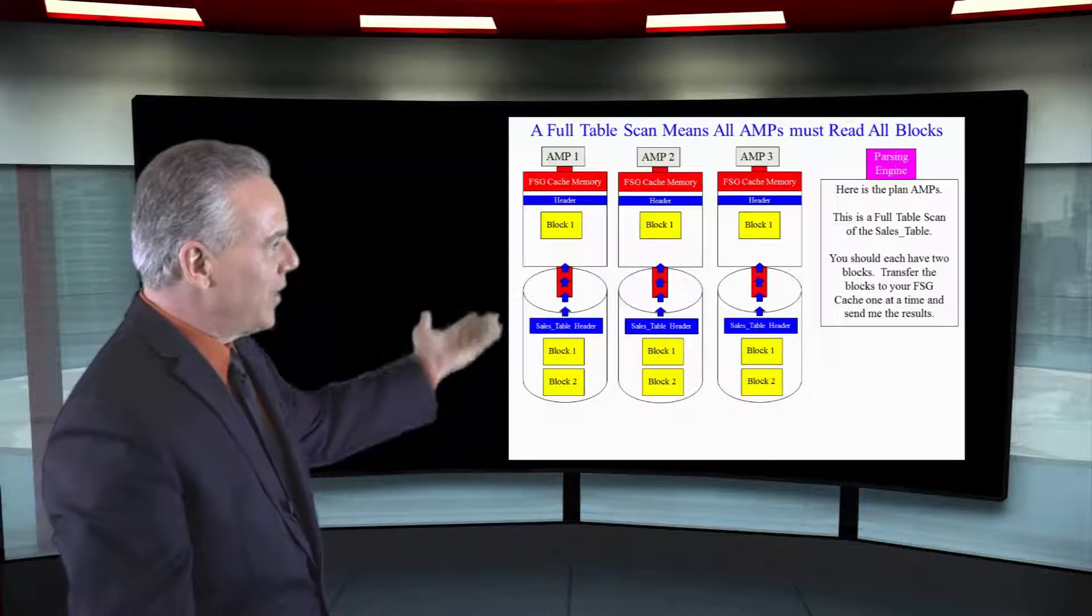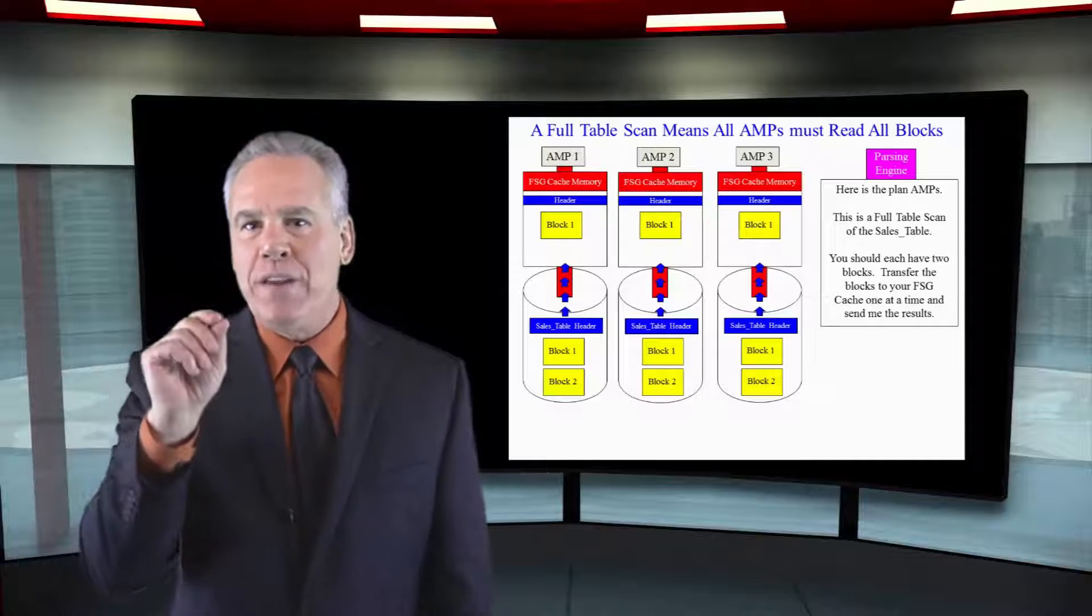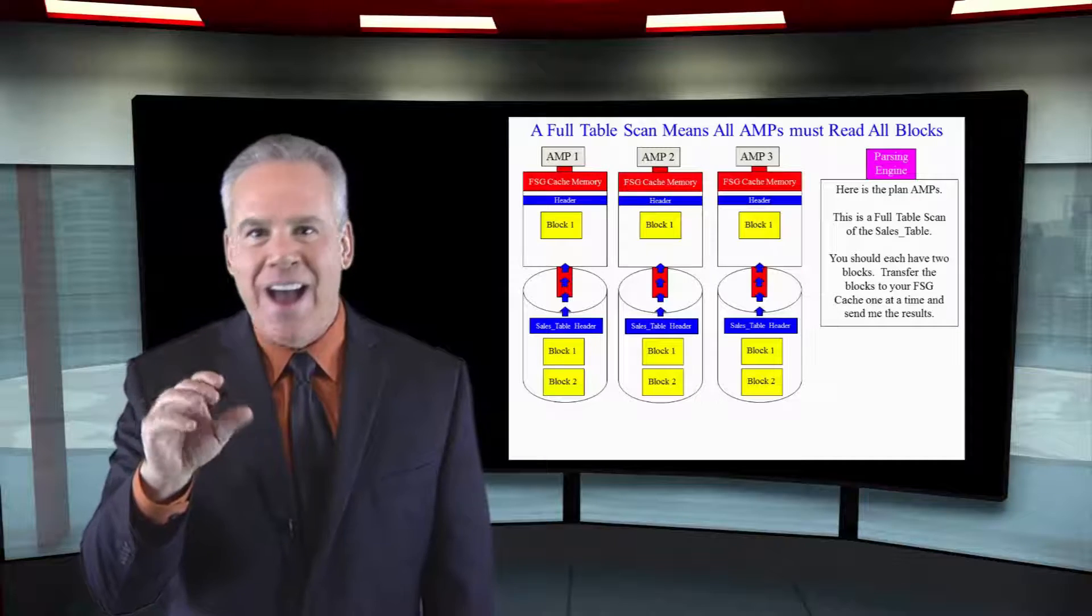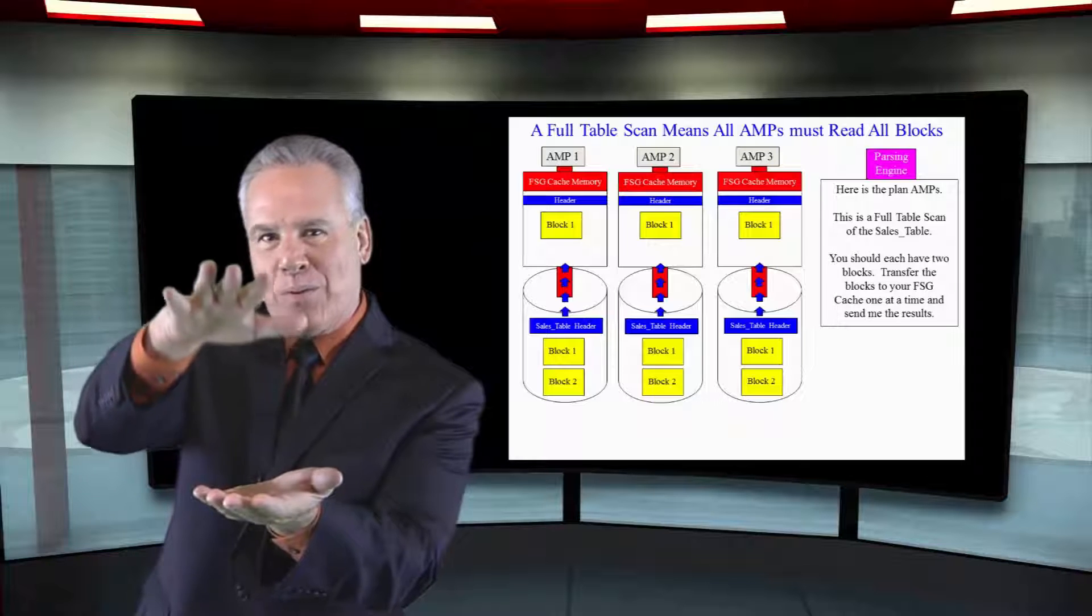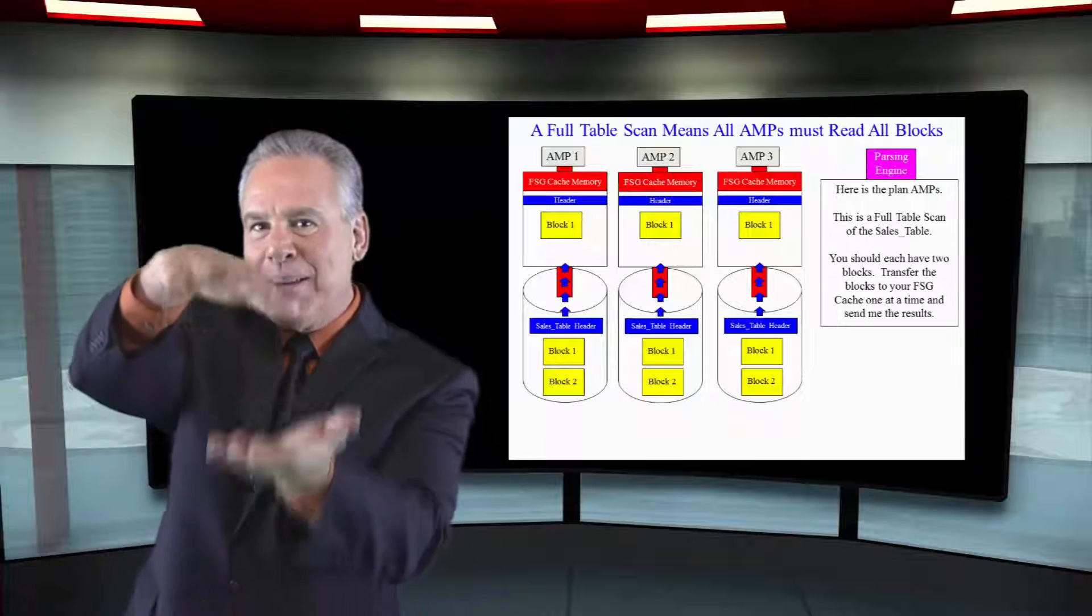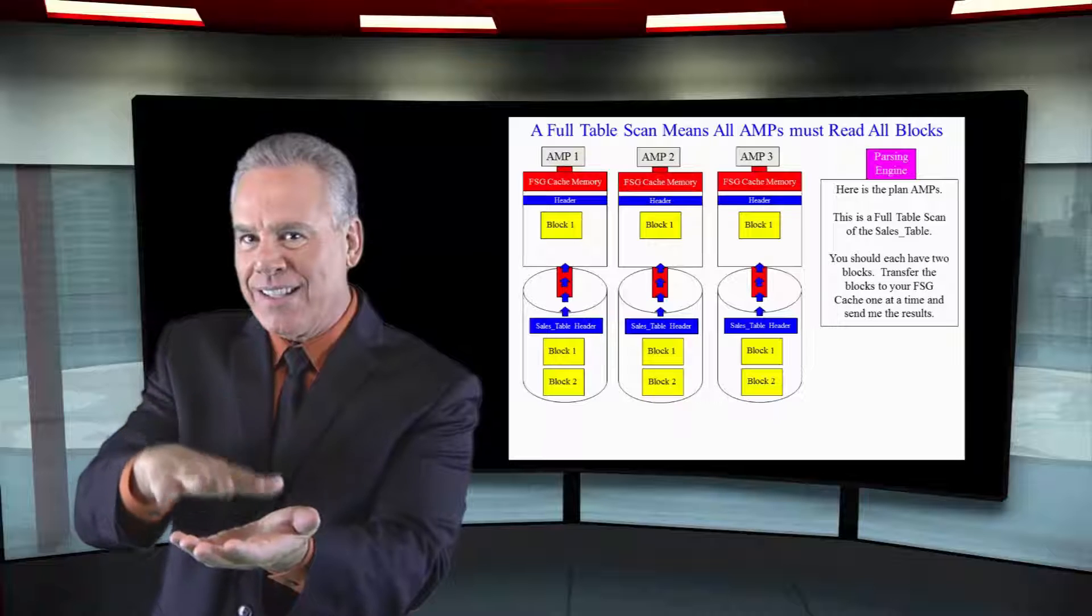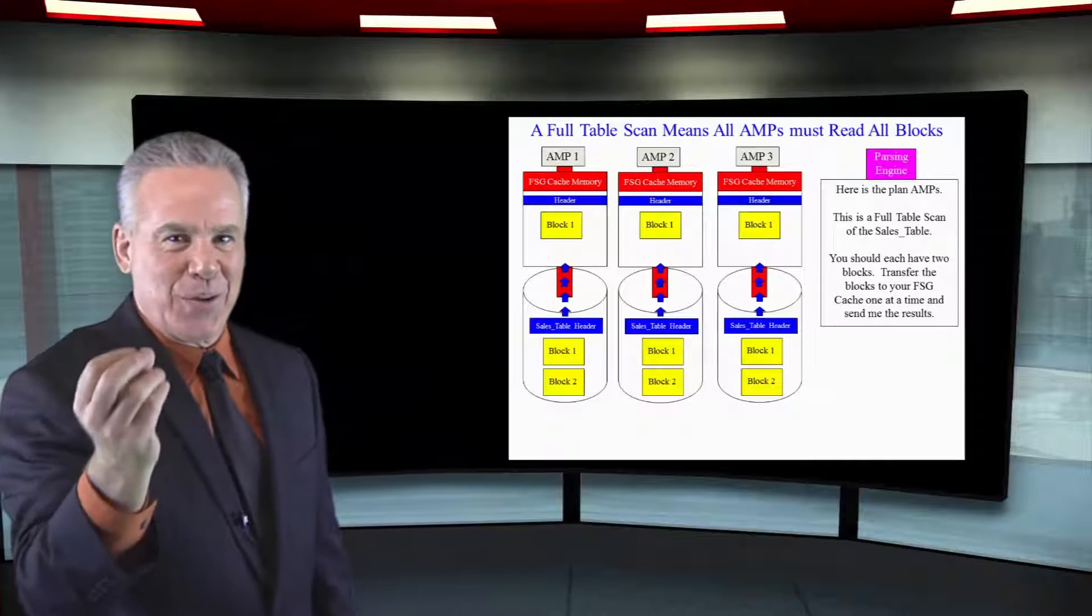So we've got two blocks on each amp. If we do a full table scan on this table, each amp will bring in the first block, process it, they'll bring in the second block to memory, process it, and that's the way it's going to work.